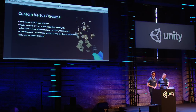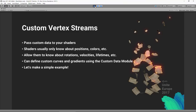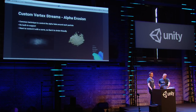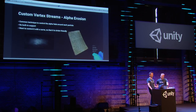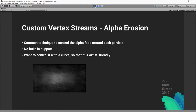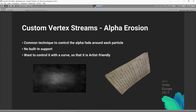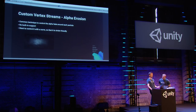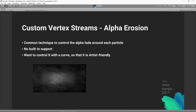We've also added a custom data module to feed custom data into this system. You can define your own curves and color gradients and pass those in. We'll make a simple example showing alpha erosion — a technique that erodes the edges of the alpha on the texture to fade out particles, dissolving the edges rather than using simple transparency. A curve controls the dissolve speed so artists can control it: starting slowly then speeding up.